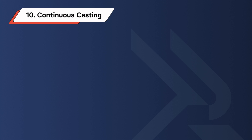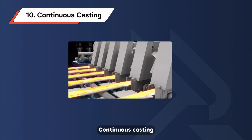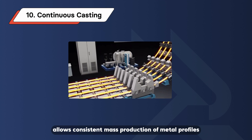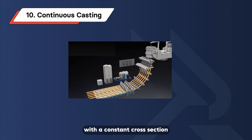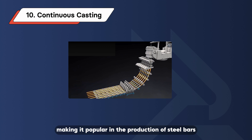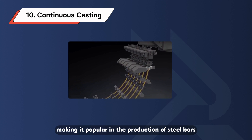Continuous Casting. Continuous casting allows consistent mass production of metal profiles with a constant cross-section, making it popular in the production of steel bars.